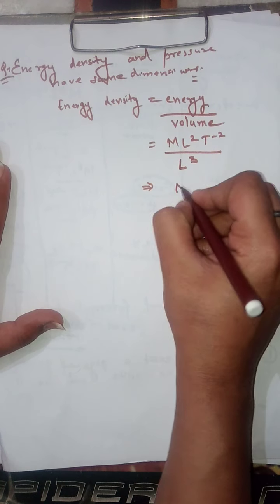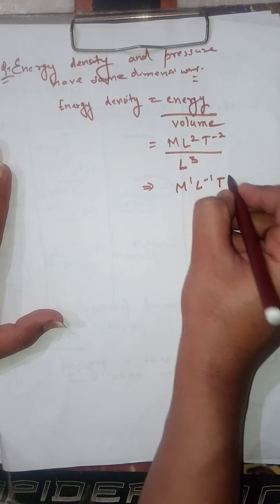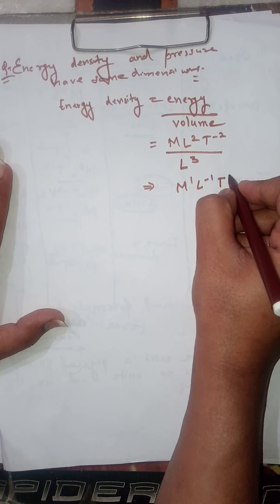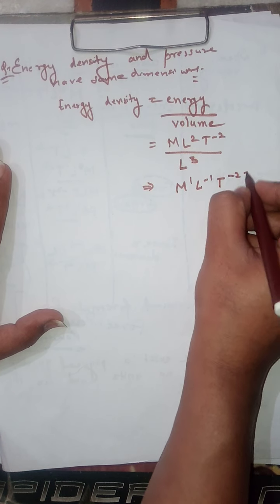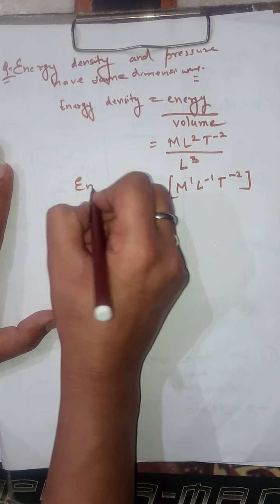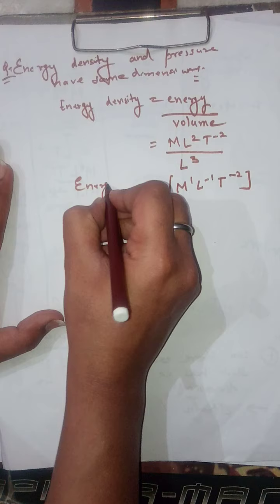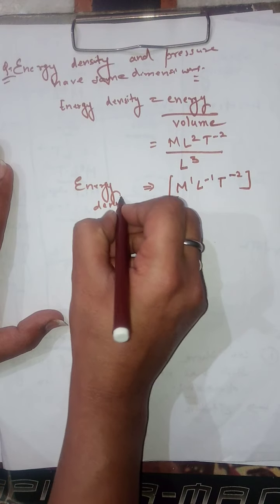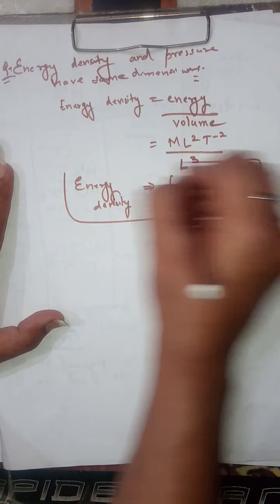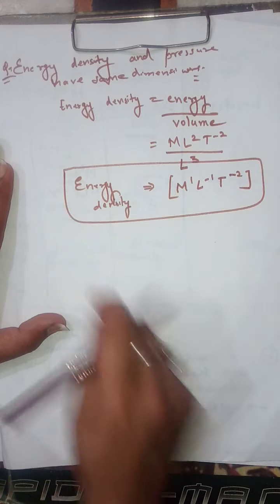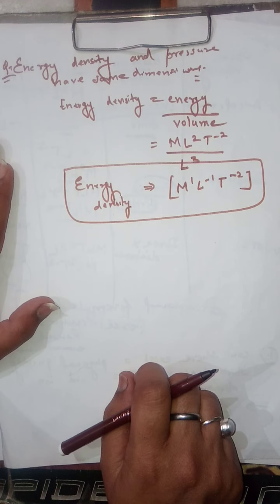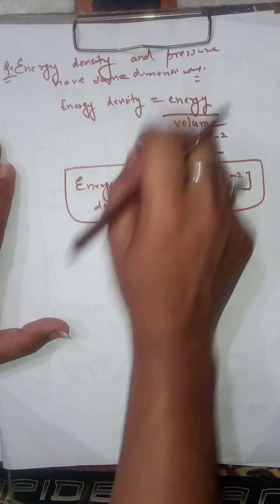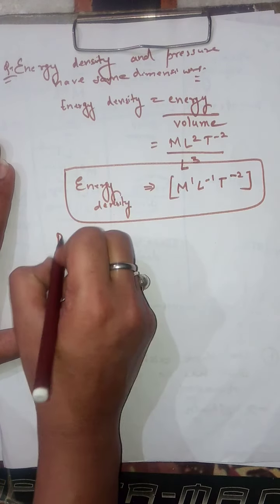So the dimensional formula of energy density works out to M¹ L⁻¹ T⁻².